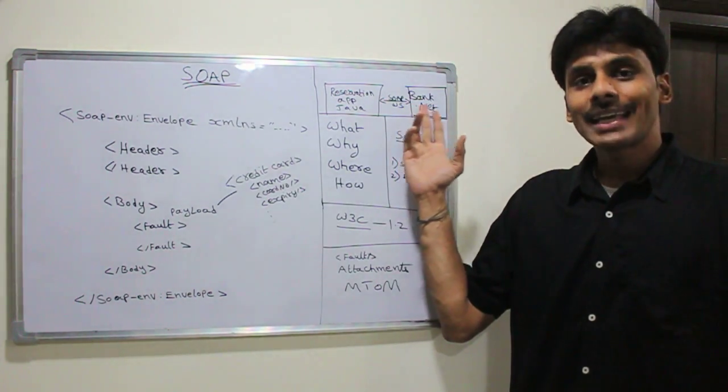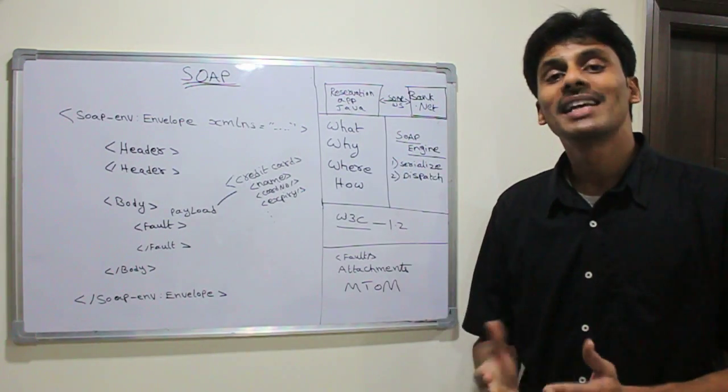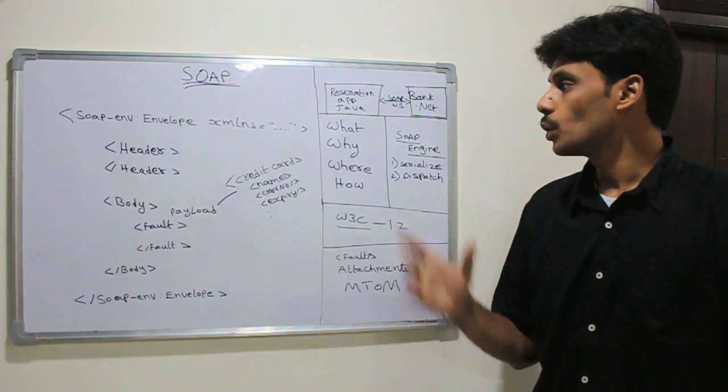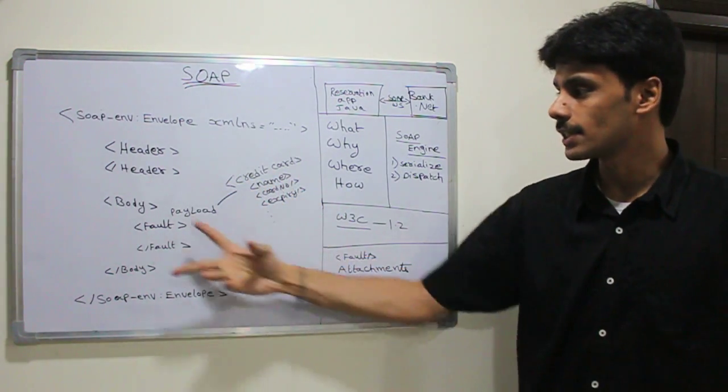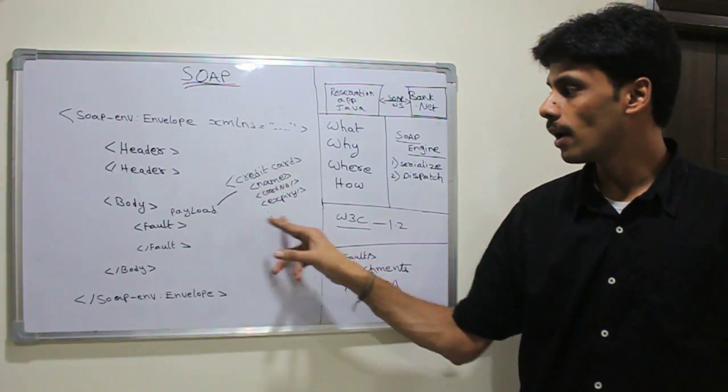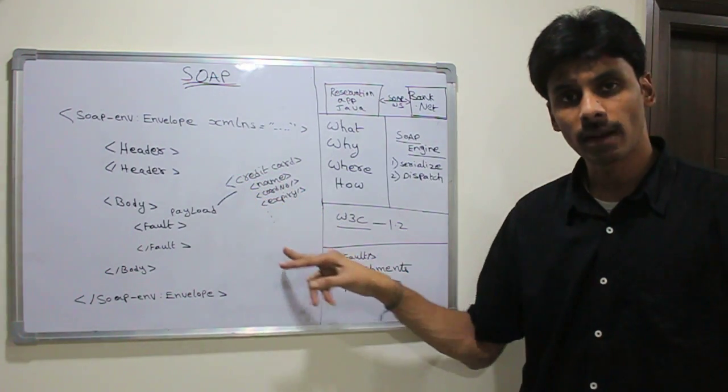Let's assume that the bank is exposing out a web service, SOAP-based web service. To do this, the payload in that case will be the credit card information. Inside the SOAP body, we have all the credit card information in XML format.